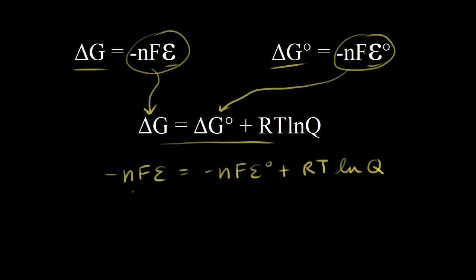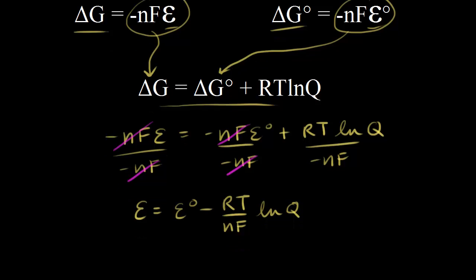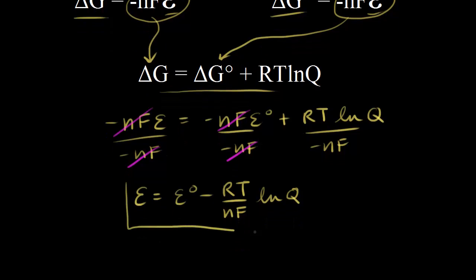Let's divide everything by negative NF. So we're gonna divide everything in here by negative NF, and let's see what cancels out. So all of this would cancel out, and we get the Nernst equation. The cell potential E is equal to the standard cell potential E zero minus RT over NF times the natural log of Q, where Q is the reaction quotient. So this is the Nernst equation.